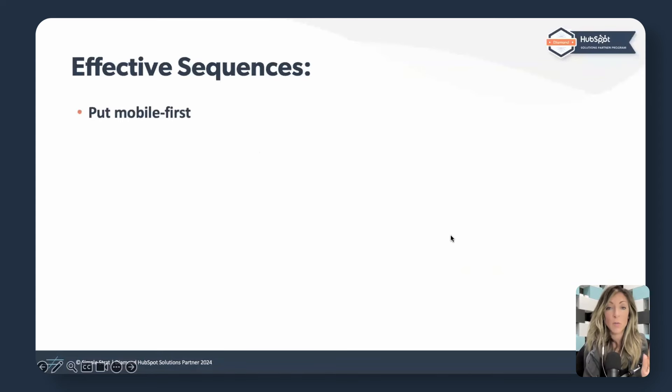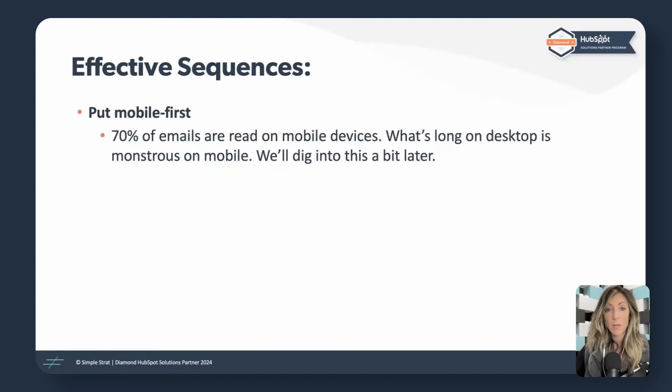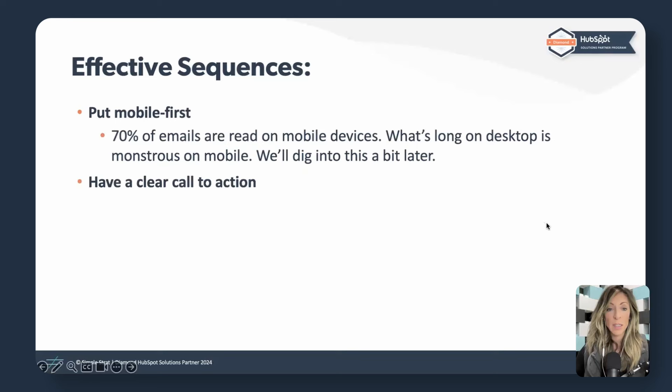Mobile first — we should not have to keep saying this, but: mobile first. I love sending myself my own emails and seeing how many scrolls it takes and how quickly I can tell what the email is about. 70% of emails are read on mobile. What looks short on desktop can actually be really long on mobile. Apple is also moving toward AI summaries at the top of emails, which is going to change the game for email — we'll need to keep our eyes and ears open on that.